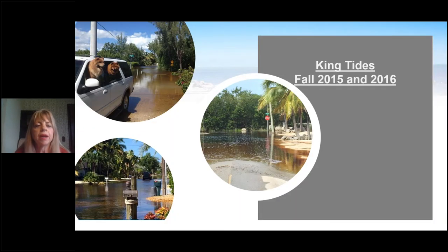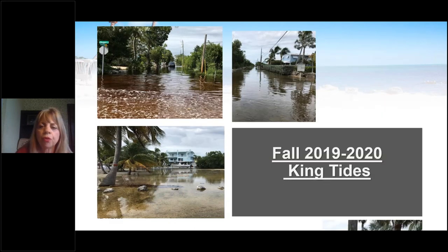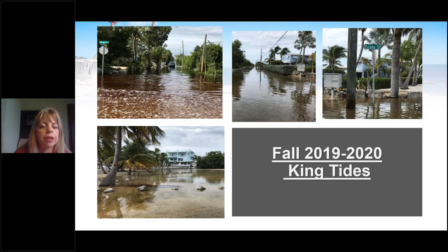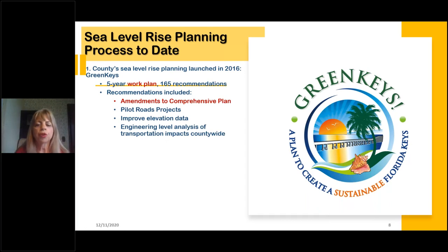Back in 2015 is when it really seemed to get out of hand. We can see from pictures what 2019 looked like — almost over a foot deep for weeks at a time. We have to get moving and determine what we're going to do. Back in 2016, we launched our five-year Green Key Sustainability and Resilience Plan — it wasn't just a plan, it was a five-year, 105-item work plan with 165 different projects, including projects for all departments within the county: engineering, environmental, planning — all working together to make the county more resilient as a whole.